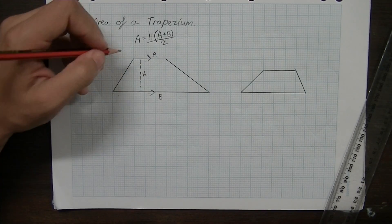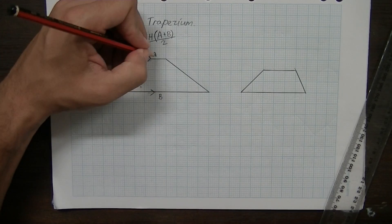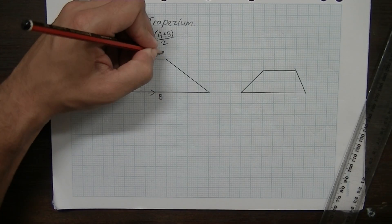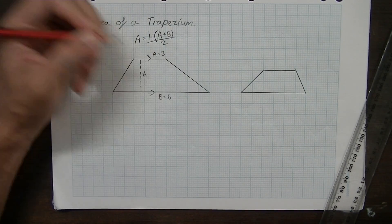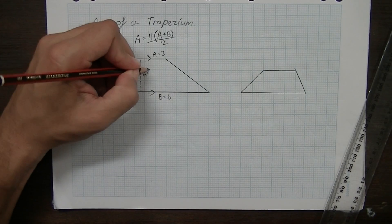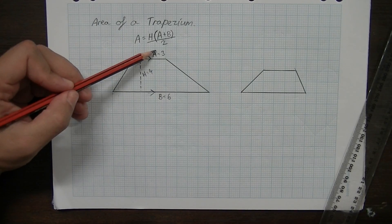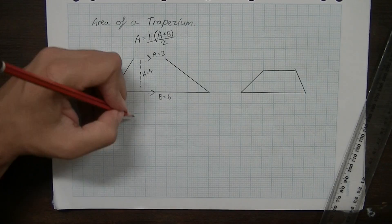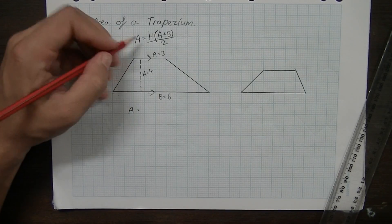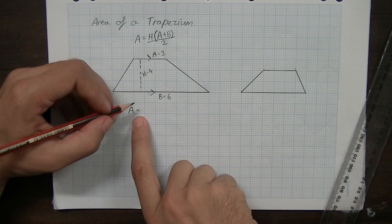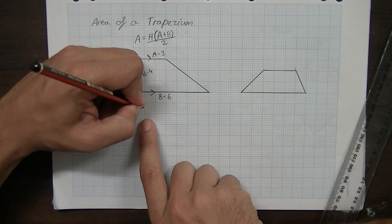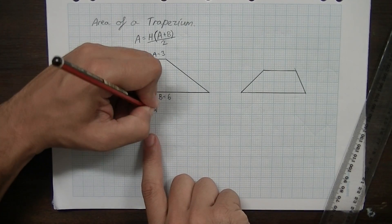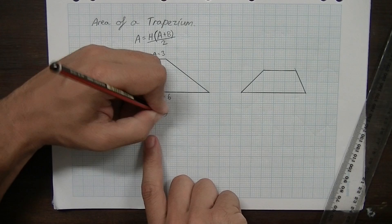Let's work our way through it. Now I'll put some numbers in. We'll call A equal to 3, we'll call B equal to 6 and we'll call H equal to 4. So A is 3, B is 6, H is 4. Just put it into the formula. So area equals H, A plus B divided by 2.